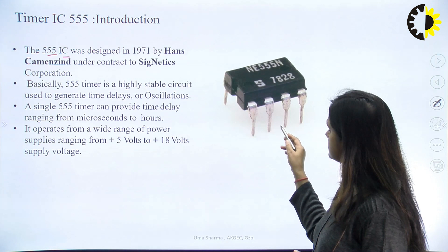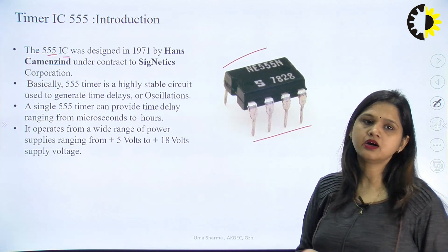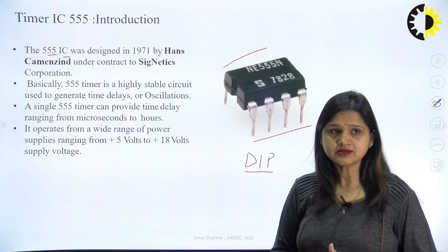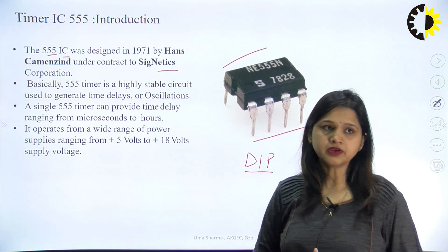In this diagram, you can see that there are 8 pins — 4 on one side and 4 on another side. So it is a dual in-line package IC, this is a DIP kind of IC, and it was designed in 1971 by Hans and given by the Signetics company.